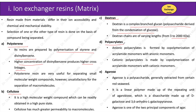Polyacrylates — anionic polyacrylates are formed by copolymerization of acrylamide monomers with anionic monomers, whereas cationic polyacrylates are made by copolymerization of acrylamide monomers with cationic monomers. Agarose is a polysaccharide generally extracted from certain red seaweed. It is a linear polymer made up of the repeating unit of agarobiose, which is a disaccharide made up of D-galactose and 3,6-anhydro-L-galactopyranose. Agarose is one of the two principal components of agar, which is made from agarose and agaropectin.